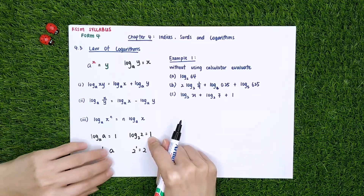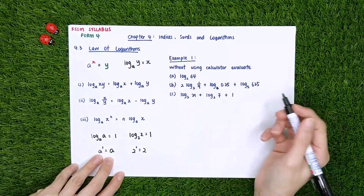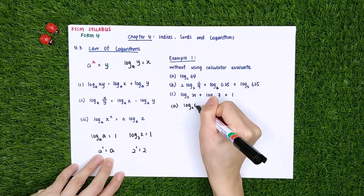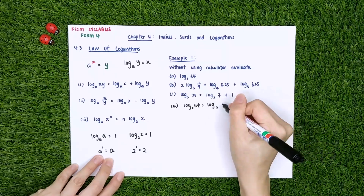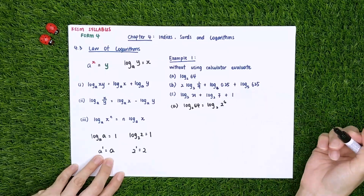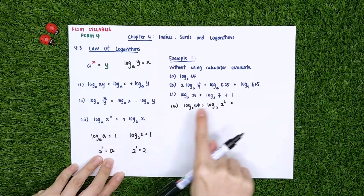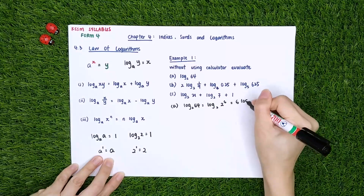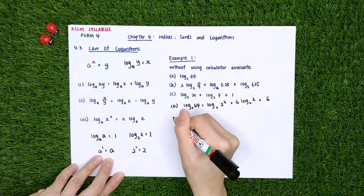Example 1: without using a calculator, evaluate. Part A: log_2(64). We know 64 can be written as 2 power of 6. Since log base 2 of 2 is here, I can apply the third law of logarithm and move the 6 to the front: 6 times log_2(2). Since log_2(2) equals 1, the answer is 6.